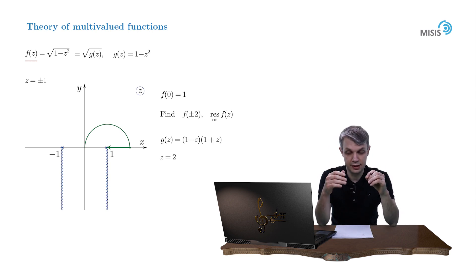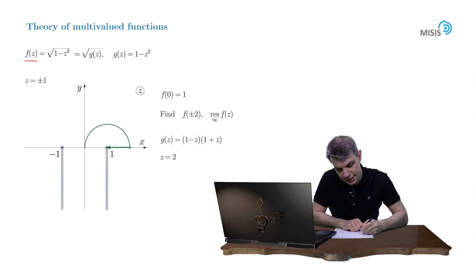So delta argument of 1 minus z is equal to negative pi.